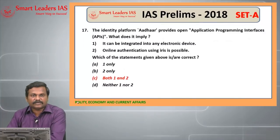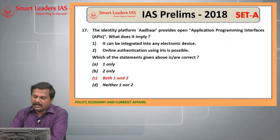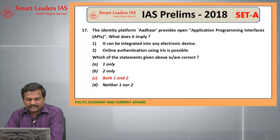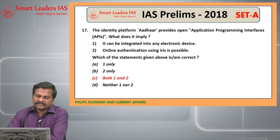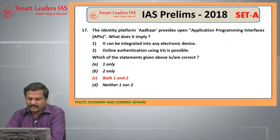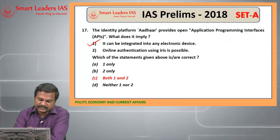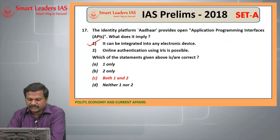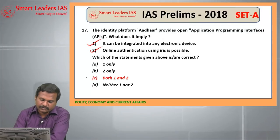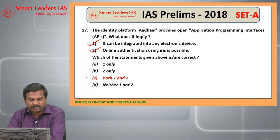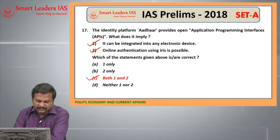17th question: Application Program Interfaces (APIs). What does this imply? It can be integrated into any electronic device — this is a right statement. Online authentication using IRIS is also possible — this is also a right statement. Both these statements are correct. So the answer is C, both 1 and 2.